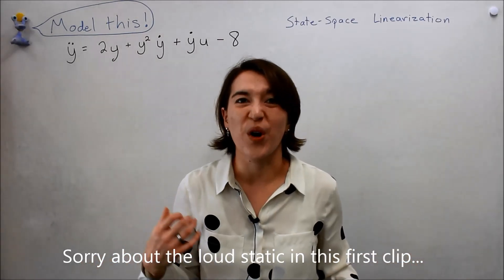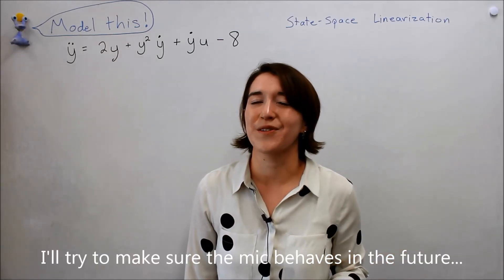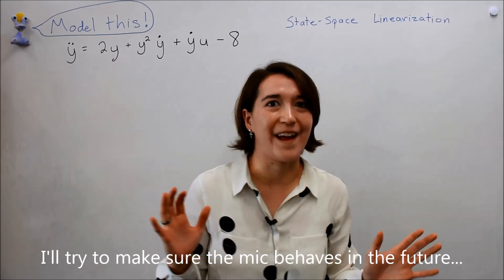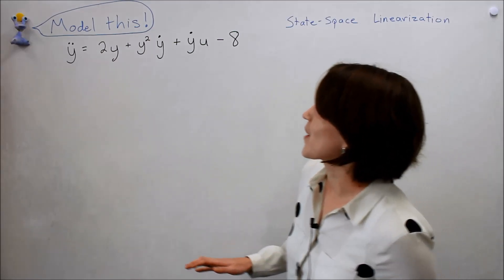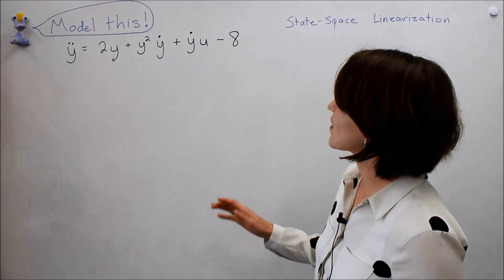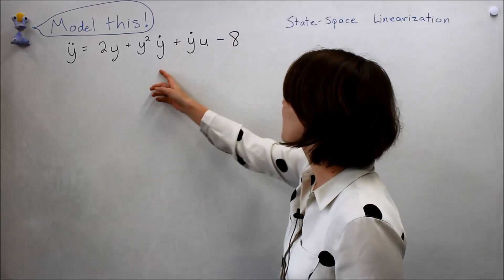While I was gone, Valerie was here all night trying to work on a problem for me to solve. She wrote it up on the board and I haven't seen it yet, so let's see what it is. Oh hey Valerie, model this! Oh gosh, y double dot equals 2y minus y squared times y dot plus y dot times u minus 8. This is just too hard, I can't do this one.